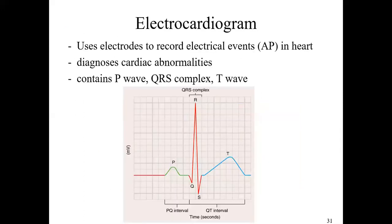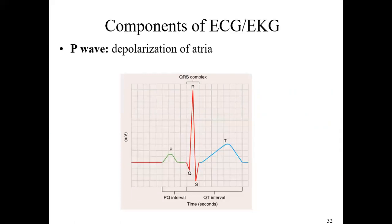The conduction system of the heart can also be examined using an EKG or electrocardiogram, which picks up the electrical signals — basically the action potentials — and maps them graphically. It's used in diagnostics to look at cardiac physiology and identify abnormalities. The three main waves to look at are the P wave, the QRS complex, and the T wave.